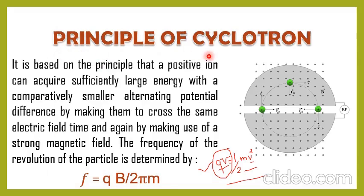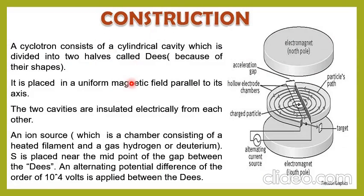Now we discuss the construction of the cyclotron. A cyclotron consists of a cylindrical cavity which is divided into two halves called D's. These D's are basically flat semi-circular hollow cylinders made of copper. Inside there is nothing — they are hollow. Because they look like the letter D, they are known as D's. We keep these two D's parallel to each other.